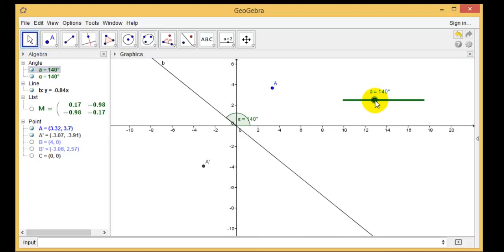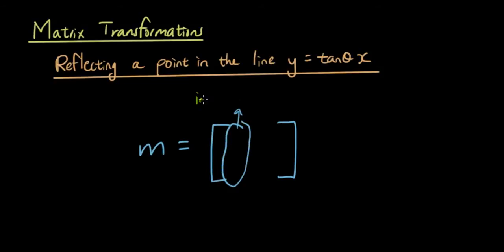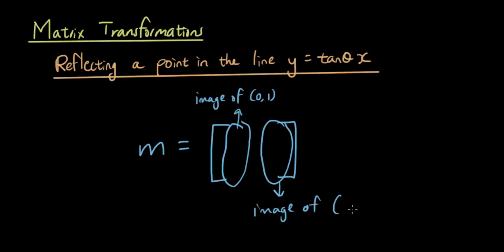Well, the first thing we do is we need to construct the transformation matrix. Now as you guys know, when you construct the transformation matrix, in the first column you put in the image of the point (0,1) after the transformation, and in the second column you put in the image of the point (1,0) after the transformation. So how do we figure out what the image is going to be?